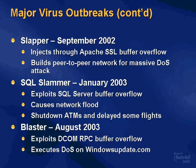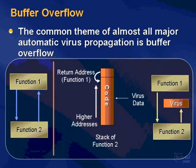Looking at these six major virus outbreaks, five of them share a common characteristic: the vulnerability they exploited was the buffer overflow vulnerability. So, what is a buffer overflow? A buffer overflow results when one function in a program calls another function, and the record of where that second function should return to after it completes is stored in an area of memory called the stack — the return address on the stack.